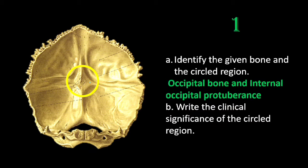The clinical significance of this region is that many sinuses join here. In the sagittal sulcus above, the superior sagittal sinus is lodged. The superior sagittal sinus is continuous as the transverse sinus, which passes through the transverse groove on the right side. On the left side, you can see the left transverse groove lodging the left transverse sinus. On the lower part there is a groove reaching up to the foramen magnum, which lodges the occipital sinus.